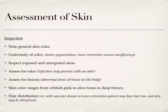Inspect both exposed and unexposed areas because you can find things patients aren't even aware of. Assess for odor — odor is a high indicator for infection. If you're changing a dressing on a surgical site and there's an odor, that's a red flag for possible infection. Assess for lesions. Skin color can range from whitish pink to olive tones to deep browns depending on ethnicity. If the patient appears pale, look at mucous membranes like the conjunctiva, because pale skin might just be their normal.